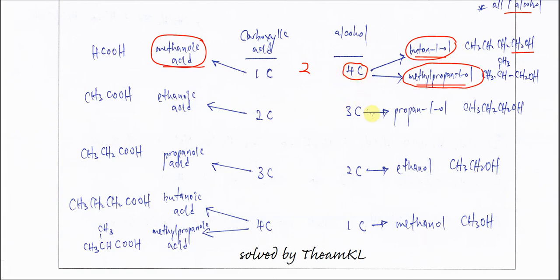If now the alcohol is 3-carbon alcohol, the possible alcohol can only be propane-1-ol. If propane-1-ol is used, the carboxylic acid must be 2-carbon carboxylic acid, which is ethanoic acid only. So these two will form 1 ester.